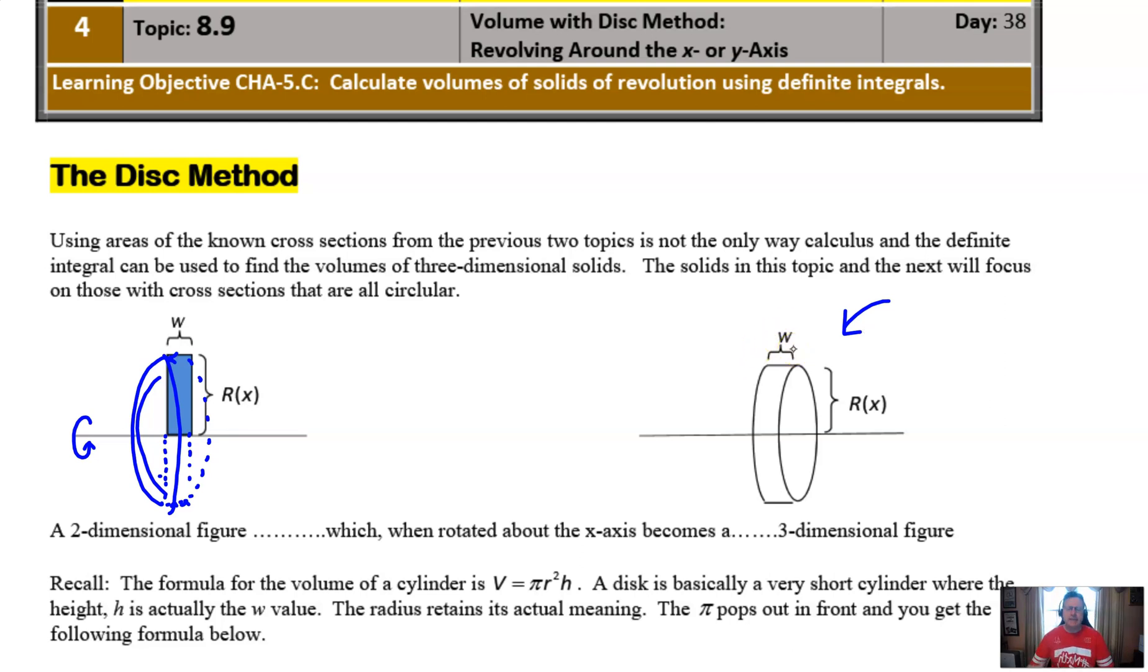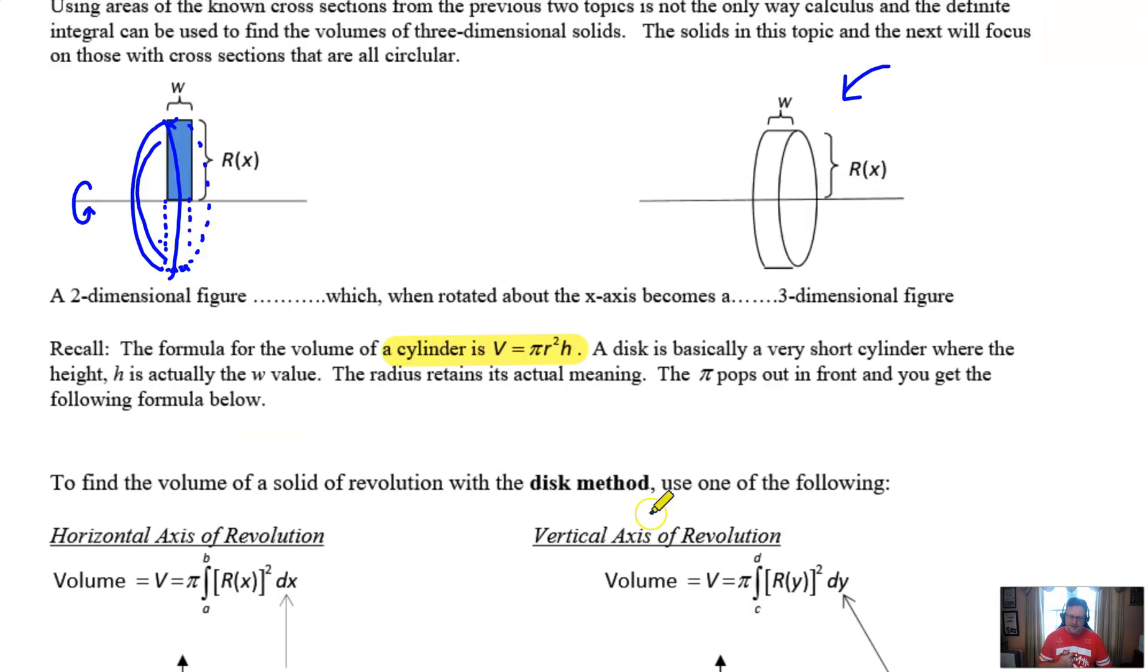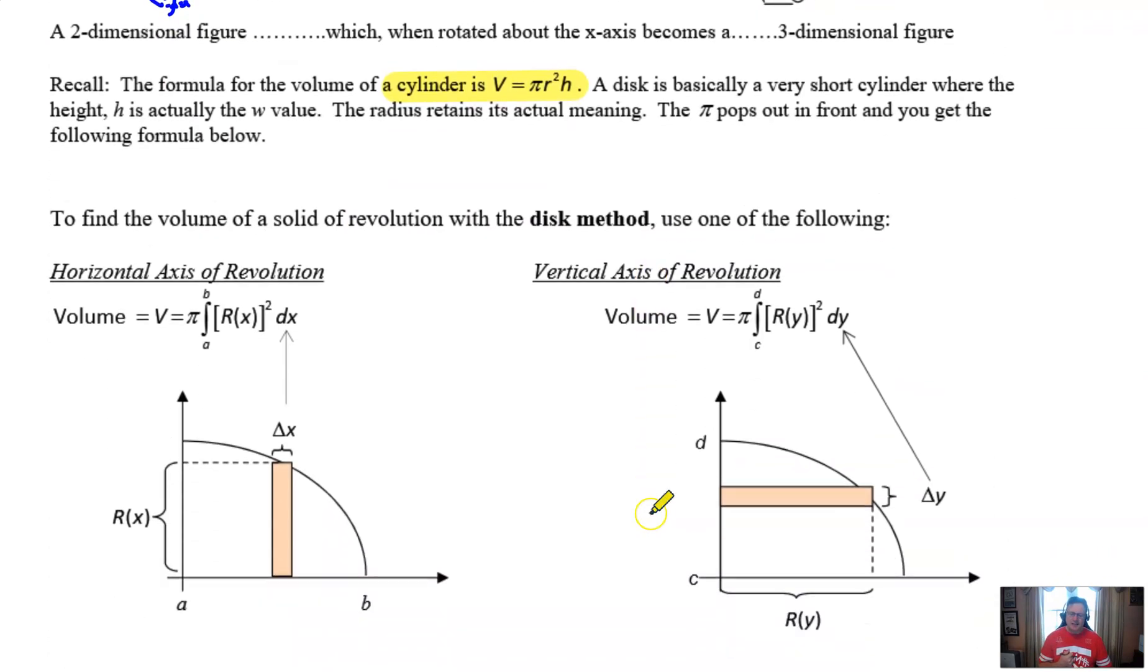If you happen to have a quarter nickel dime or penny nearby, that's a really good example of a cylinder that's got a really thin height to it, a really small W value. And that's where this all begins. The reason is because we have a very handy formula that we can use that will compute the volume of a cylinder, and it happens to be right here. A lot of times these geometric formulas are easy to forget when you don't use them very often. You would never have to know this formula on the AP calculus exam. But that π r squared times h is going to serve as the basis to build our new integration formula.